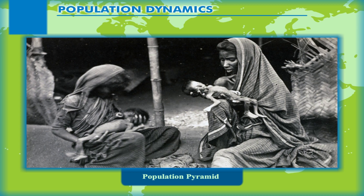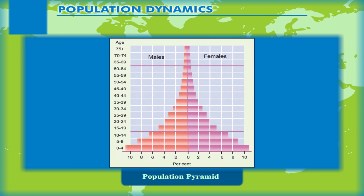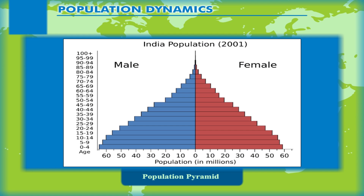Relatively few become adults and there are very few old people. This type of pyramid can be seen in the case of Kenya. In countries where death rates, especially in infants, are decreasing, the pyramid is broad in the younger age groups because more infants survive to adulthood.